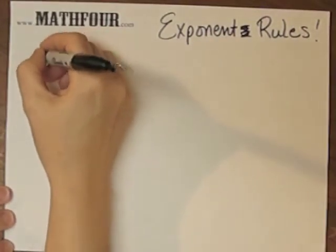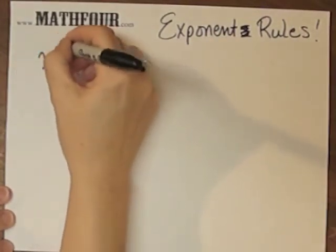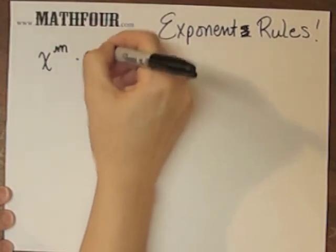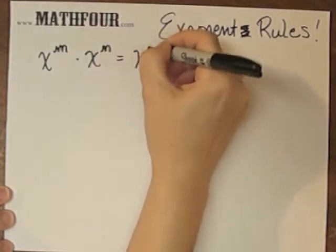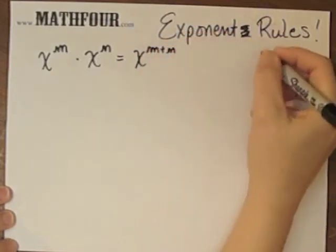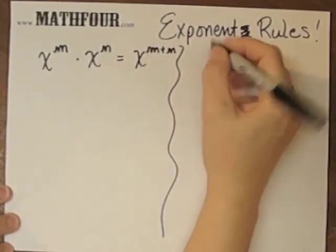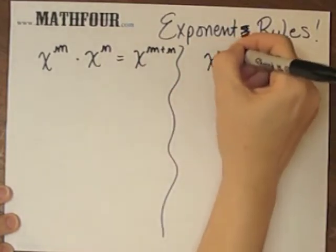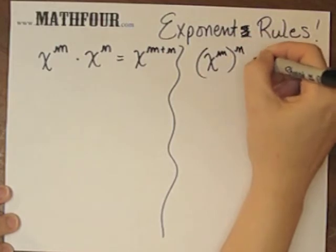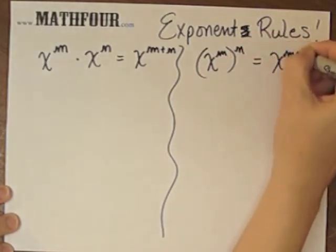First, I'm looking at two rules in this video: x to the m times x to the n. And don't get freaked out right now. This is the rule, and I'm going to explain how to remember it forever and ever. The other rule is x to the m to the n, equals x to the m times n.